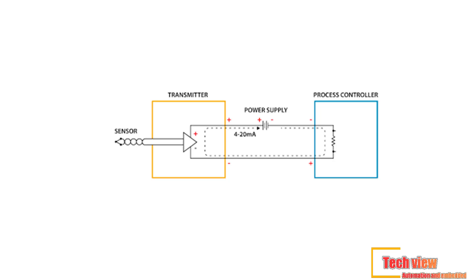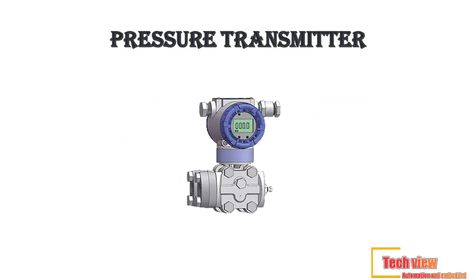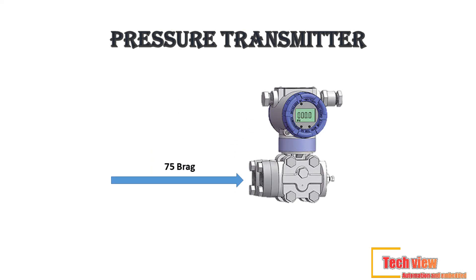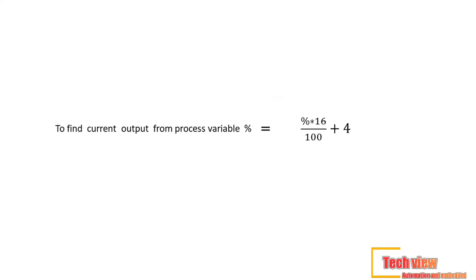First we will calculate the milliamps from the process variables. Before calculating milliamps, we have to convert our process variables to percentage. Let's assume we have a pressure transmitter whose calibration range is 0 to 200 bar. The transmitter is connected in the pipeline and currently measures 75 bar. We have to find the milliamps output from the transmitter. For that we use a formula: current output equals percentage of process variable times 16, divided by 100, plus 4.